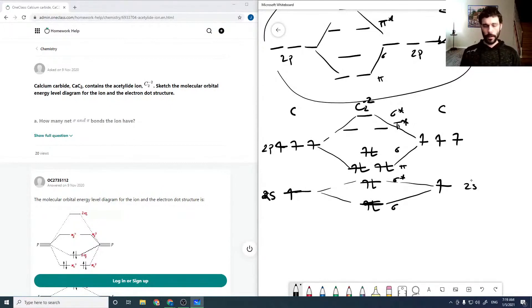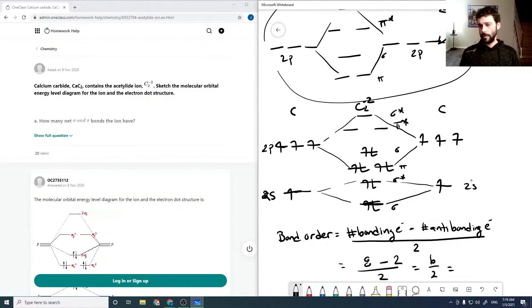So we can see that if we do the bond order out, our bond order is our number of bonding electrons minus our number of anti-bonding electrons all over two. So if we count this up here, we have two, four, six, eight bonding electrons, and we have two anti-bonding, divided by two, six over two, which equals three. So we have a triple bond.